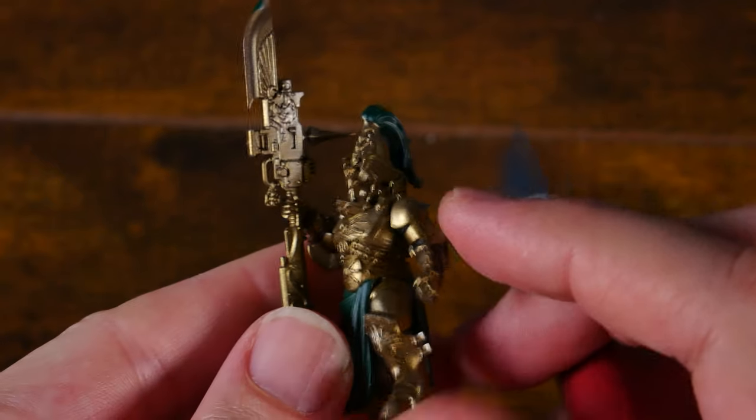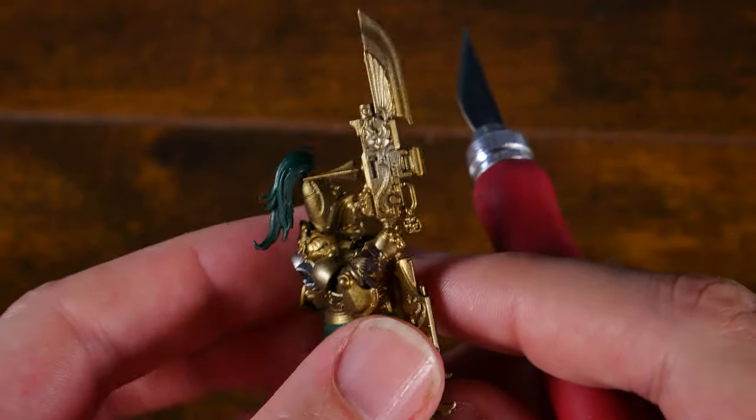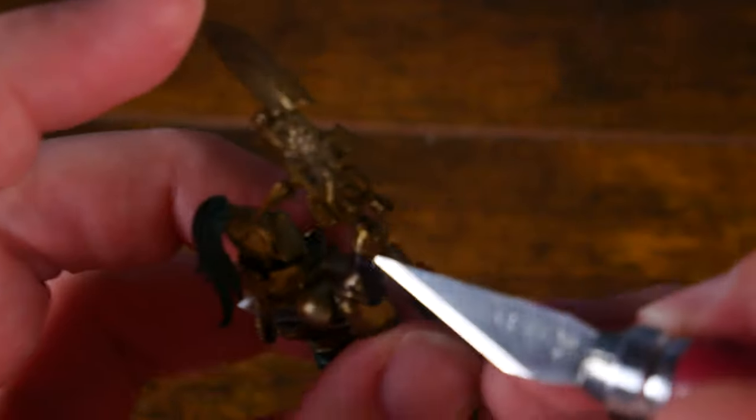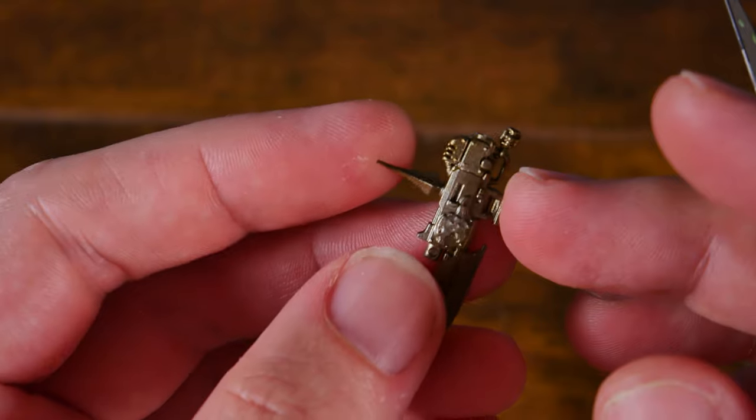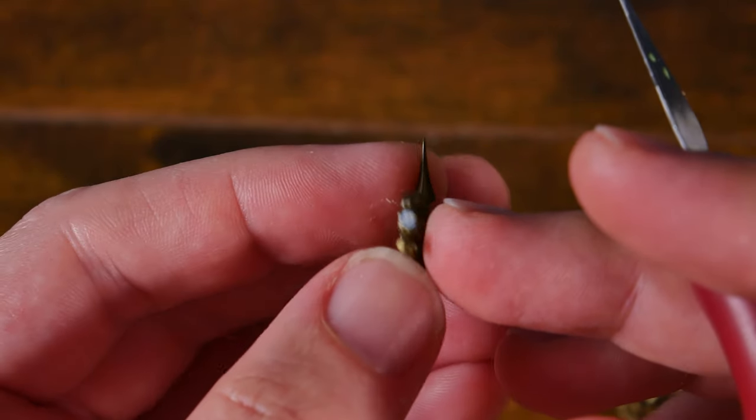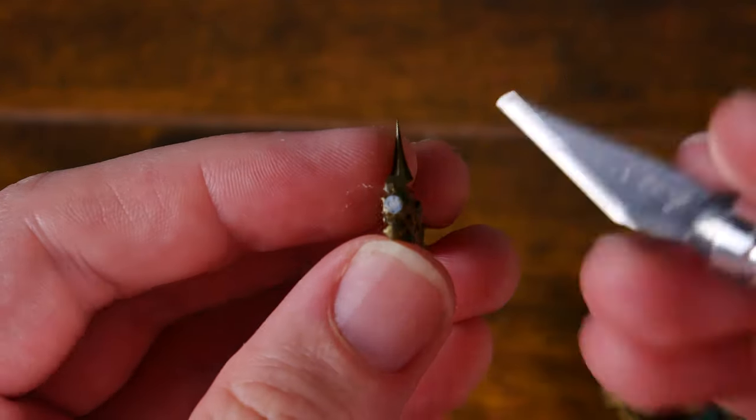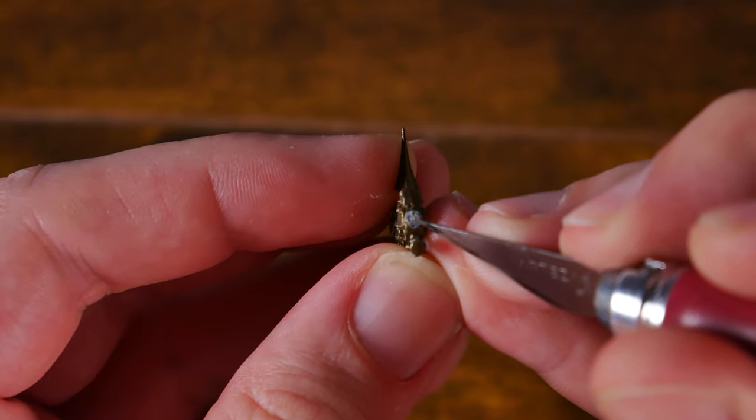Because these weapons were loose and not actually broken off yet, the first thing I had to do was completely cut them off. But if your mini's weapons have completely snapped off, the first thing you'd want to do is smooth out any rough edges on the connection point, as it'll make the next steps a lot easier.